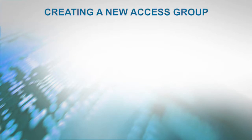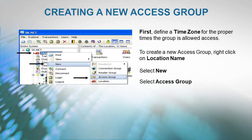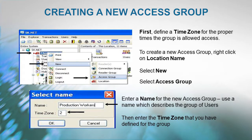Before creating a new access group, you need to define a time zone for the proper times the group is allowed access. To create a new access group, right-click on the location name, select New, then select Access Group. Enter a name for the new access group — we recommend a name which describes the group of users — then enter the time zone you have defined for the group.